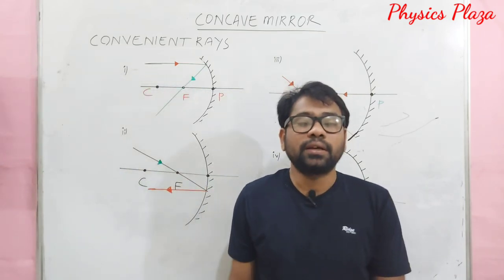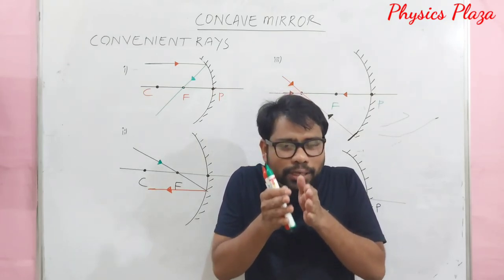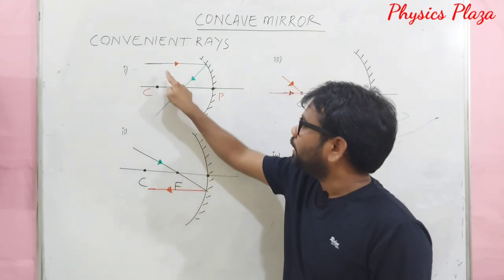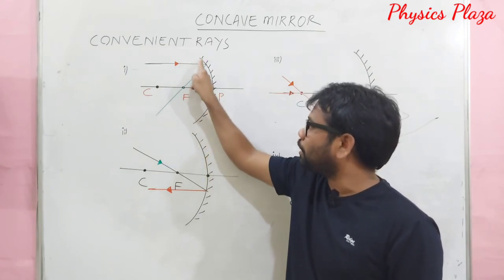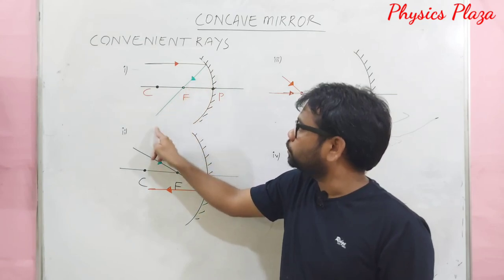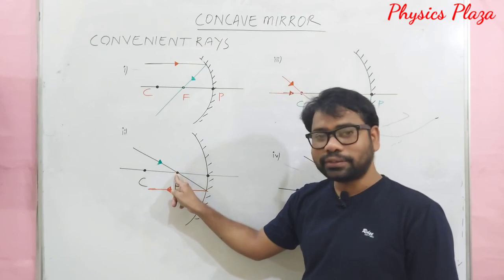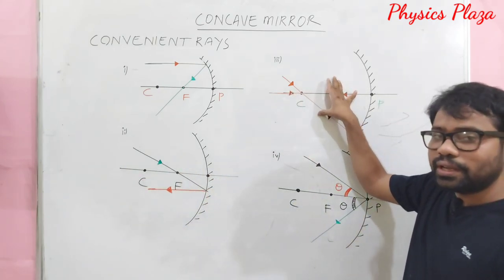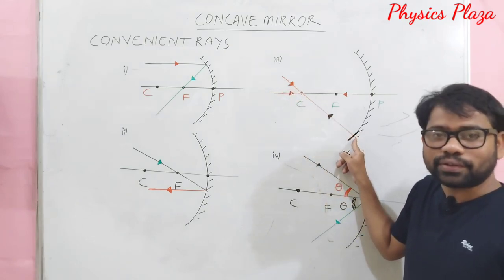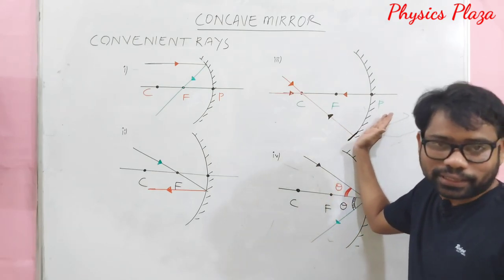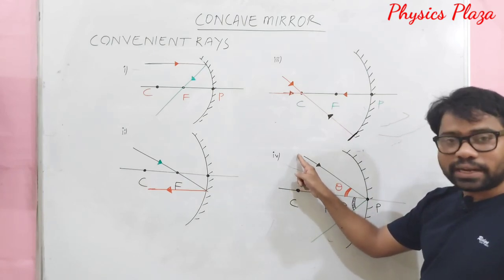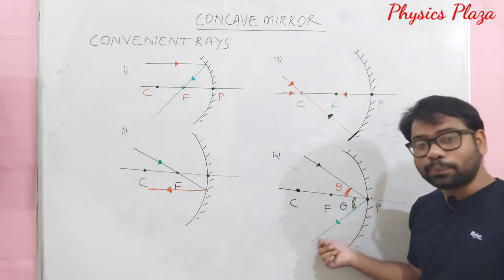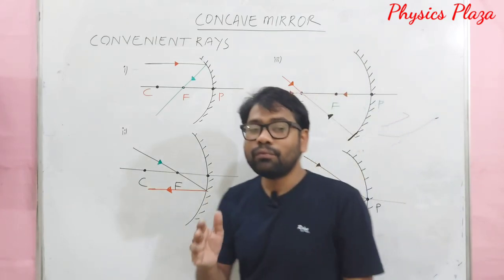These are the four important convenient rays for constructing ray diagrams for a concave mirror. To summarize: a ray parallel to the principal axis reflects through focus; a ray through focus reflects parallel to the axis; a ray through the center of curvature retraces its path; and a ray striking the pole reflects with the same angle. Please note these down.